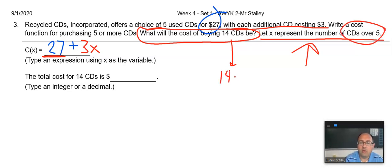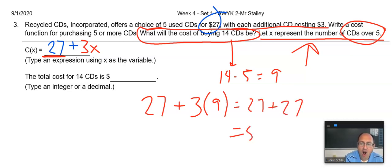So, X is the number of CDs over five. So, 14 take away five means that we have nine CDs that are over five. So, if we're going to use our function, 27 plus three times nine, which is 27 plus 27, or 54. And, that's your answer to this question.